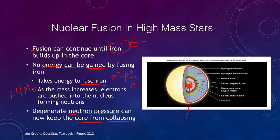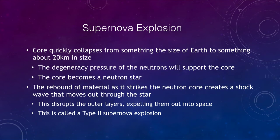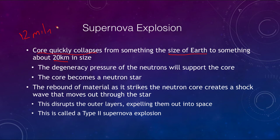So let's look at how the supernova will occur. The core quickly collapses — this is extremely fast, not just from an astronomical standpoint but from any standpoint. Essentially you've compressed it down from the size of the Earth, where electron degeneracy pressure was holding it up, to something about 20 kilometers — about 12 miles — in size. We're talking about going from a planet-sized object to the size of a city. At that point the degeneracy pressure of the neutrons will support the core and we form what is called a neutron star.